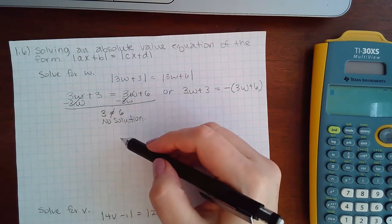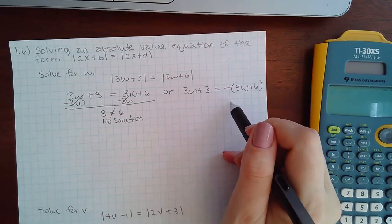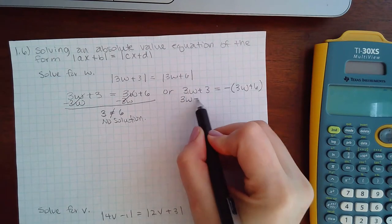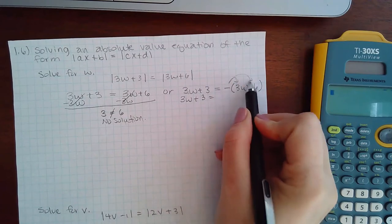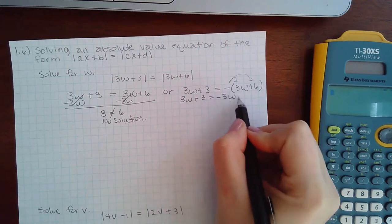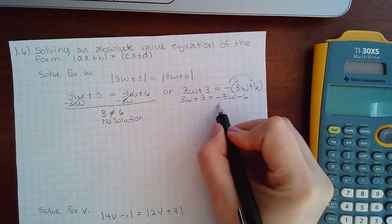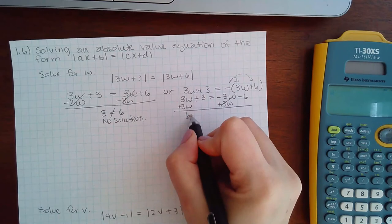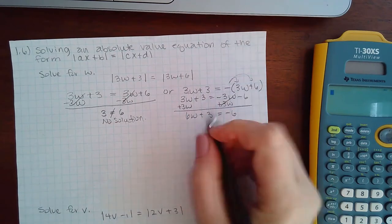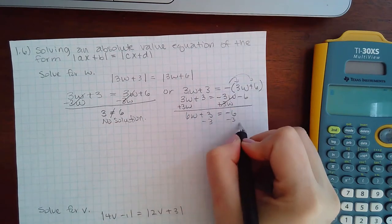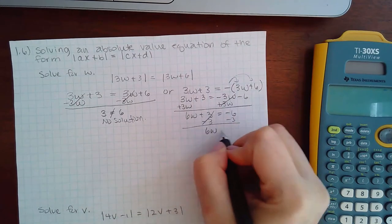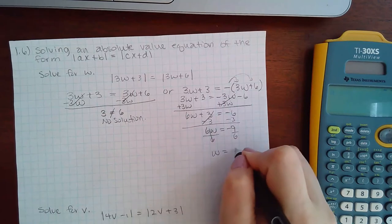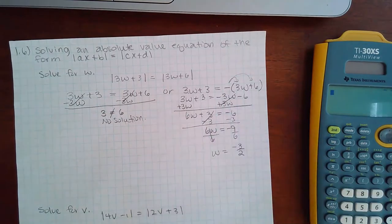It just means I don't get any answers from this particular equation, but I could get some solutions from this equation. So I would have 3w plus 3 equal to negative 3w and a negative 6. In this case I would add 3w to move it over and I get 6w plus 3 equals negative 6. Then if I minus 3 on both sides I get 6w equals negative 9.